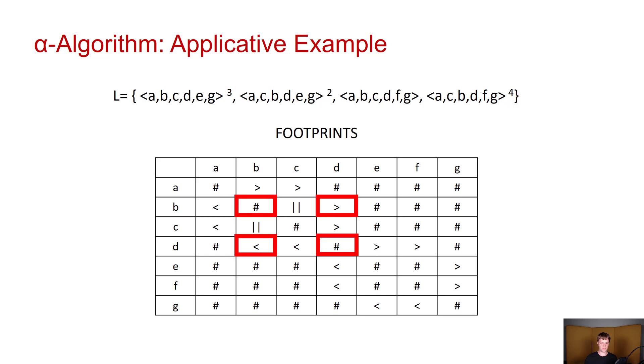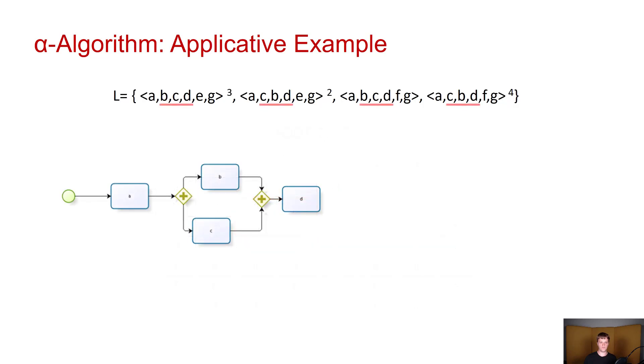Then we go back to our footprints and we start looking at the following activities. So we see that B is followed by D, we see that C is also followed by D, and as we saw before there is a parallel relationship between B and C. So this is obviously going to give us our AND join gateway.